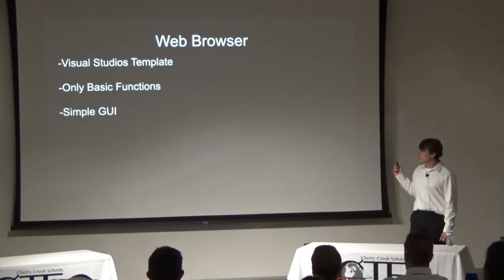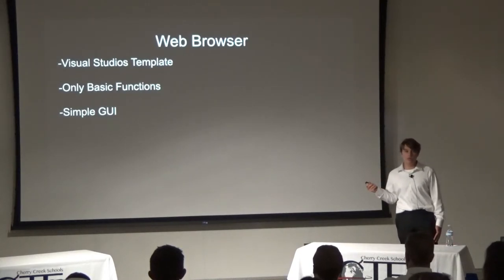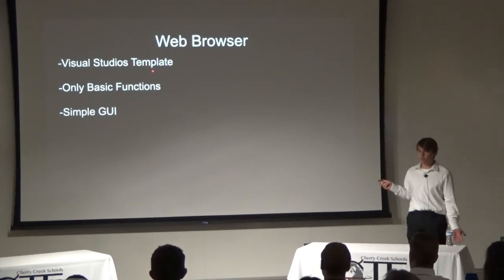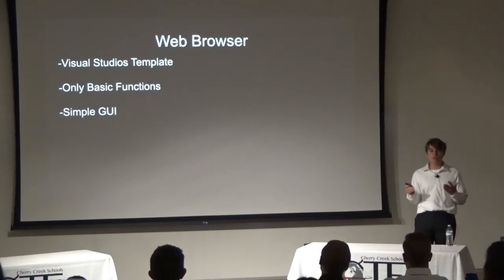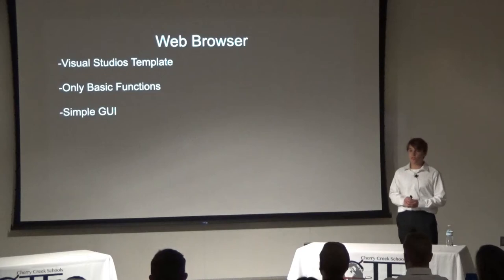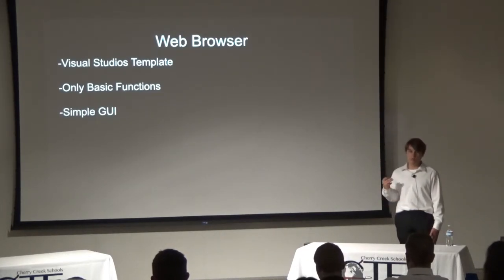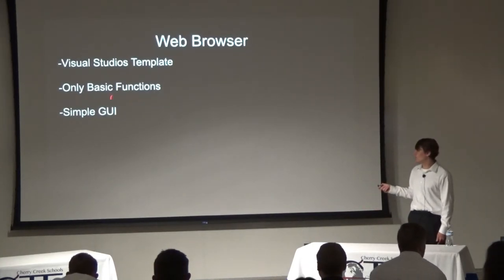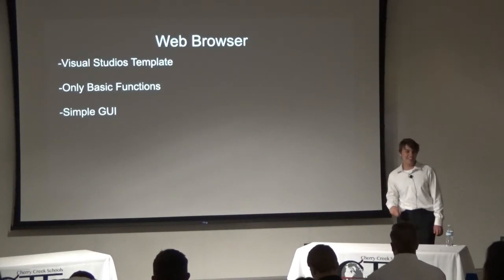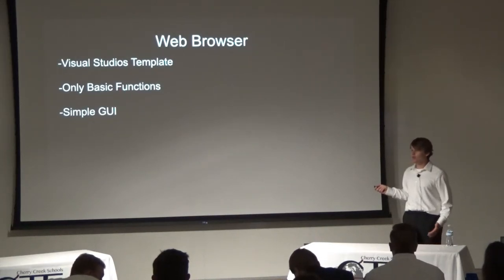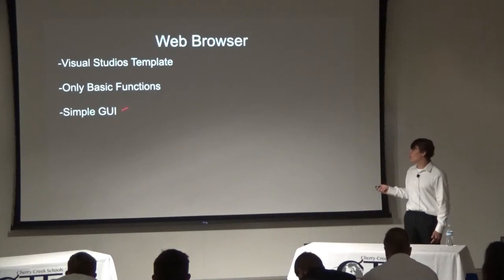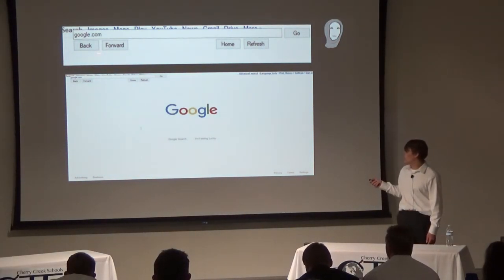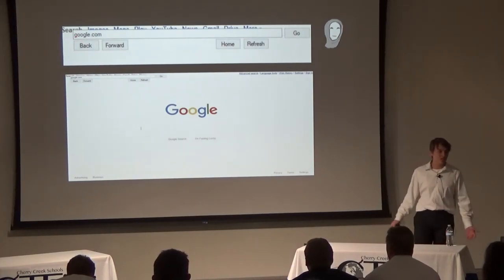For the web browser, I built it using Visual Studios. Visual Studios has templates you can use, and after some research I found they had a web browser template. The template provides the rendering engine, but you still have to set up all the functions — loading new pages, going back, going to a home screen, or refreshing. My web browser only handles basic functions; it cannot handle scripts at all, which is why it can't load complex sites like Chase's website. It also has a very simple GUI — a basic back, forward, and search bar interface — but it does serve its purpose.